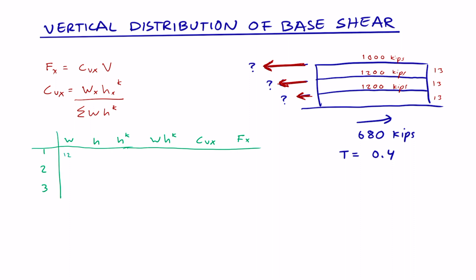The weight of the first level is 1,200 kips, the second level is also 1,200 kips, and the third level is 1,000 kips. The height of each level from the ground is 13, 26, and 39 feet, because each level is 13 feet high.